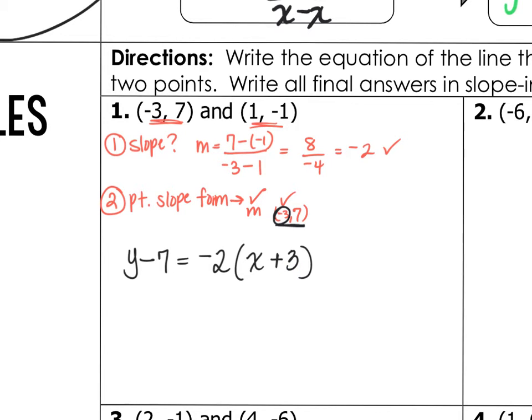So we found our slope. We grabbed a point and we put it into point-slope form. Now, switch it into Y equals MX plus B and finish this party.